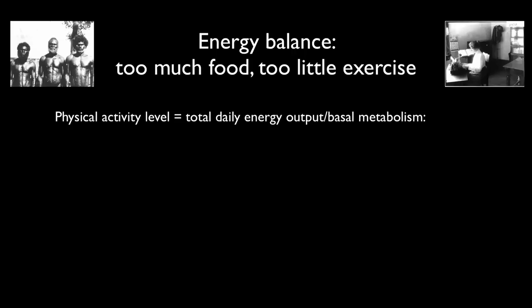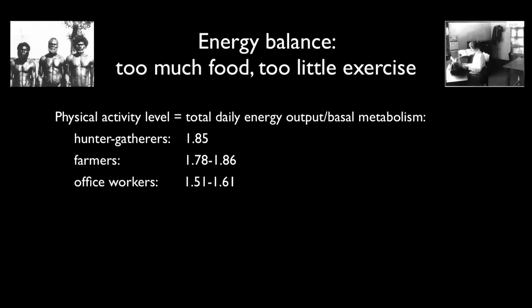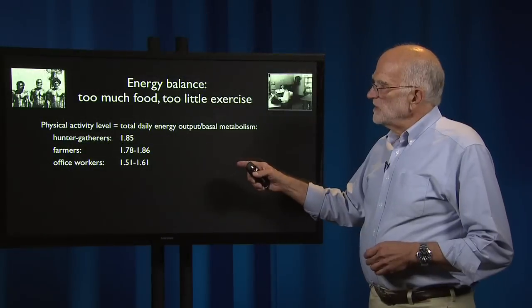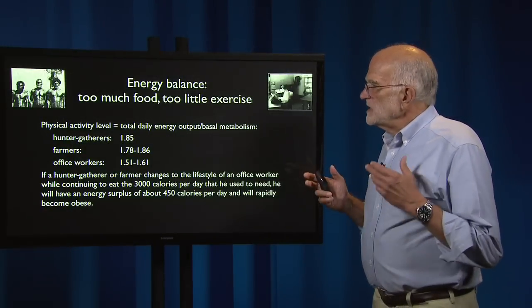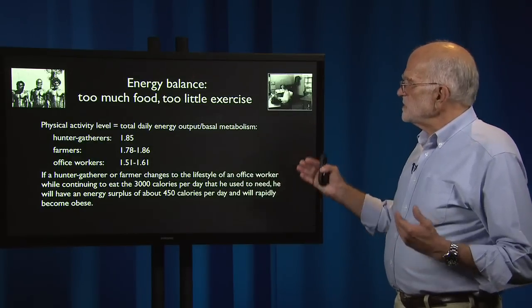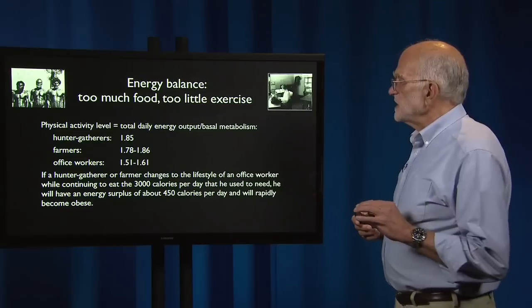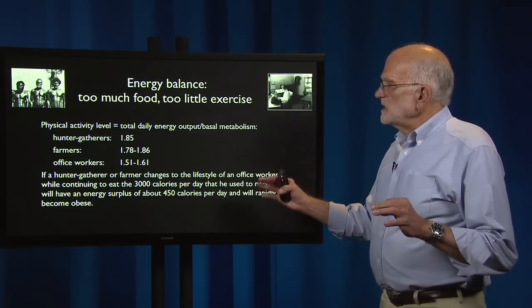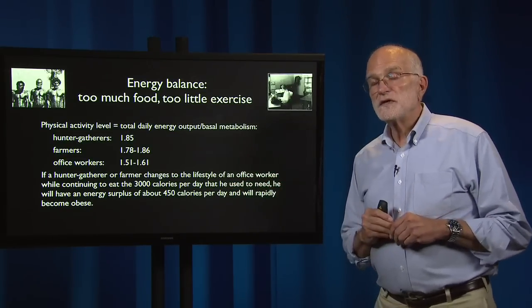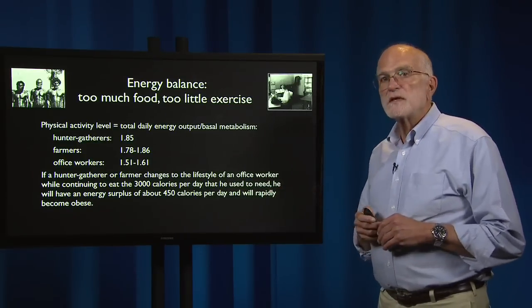The physical activity level is defined as the total daily energy output divided by the basal metabolic rate. In hunter-gatherers, it's about 1.85. In farmers, it's about 1.78 to 1.86 — so farmers can be working just as hard as hunter-gatherers. In office workers, it's about 1.51 to 1.61. This means that if a hunter-gatherer or farmer adopts the lifestyle of an office worker while continuing to eat the 3,000 calories a day they used to need, they will have an energy surplus of about 450 calories a day — enough to make them rapidly obese.